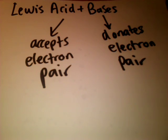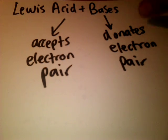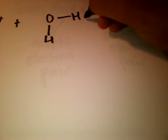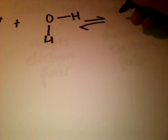We can have a look at some equations and it will help you work out which one is a Lewis acid and which one is a Lewis base. We have a hydrogen ion — H⁺ — plus H₂O, which is oxygen with two hydrogens. It's a reversible reaction and we get the hydroxonium ion.